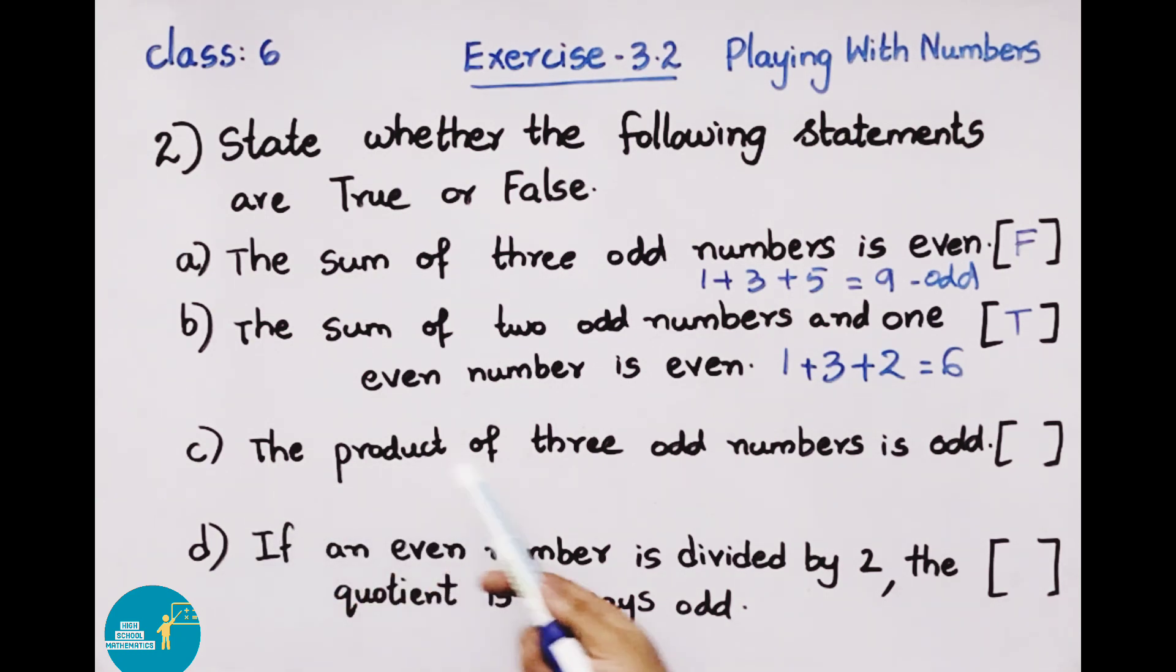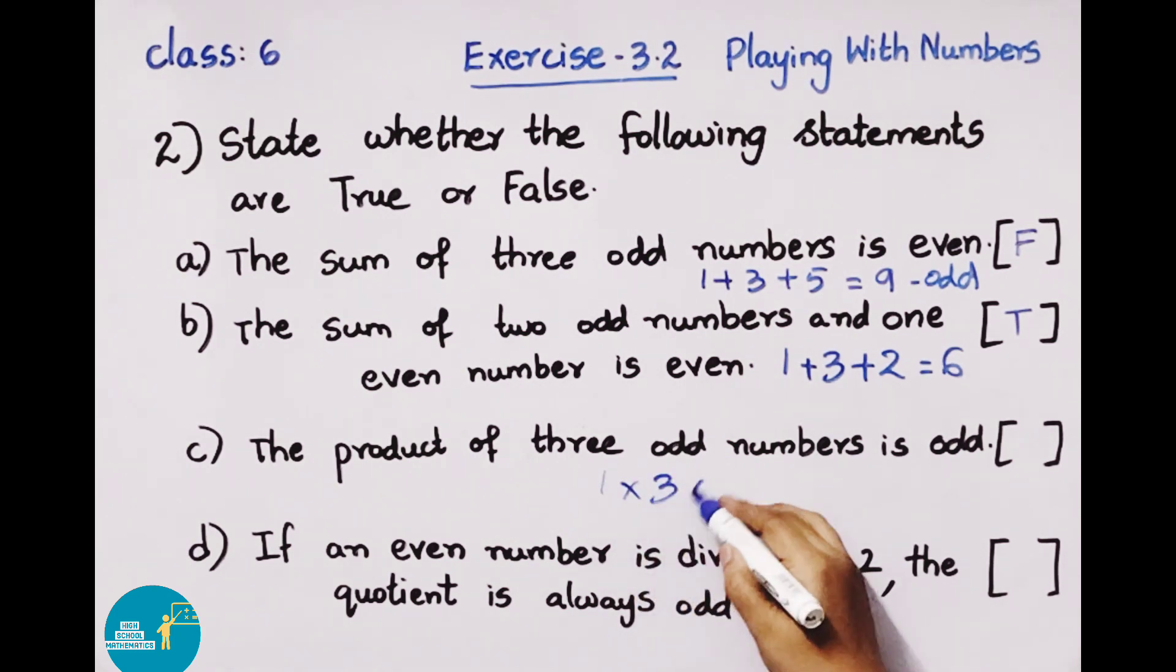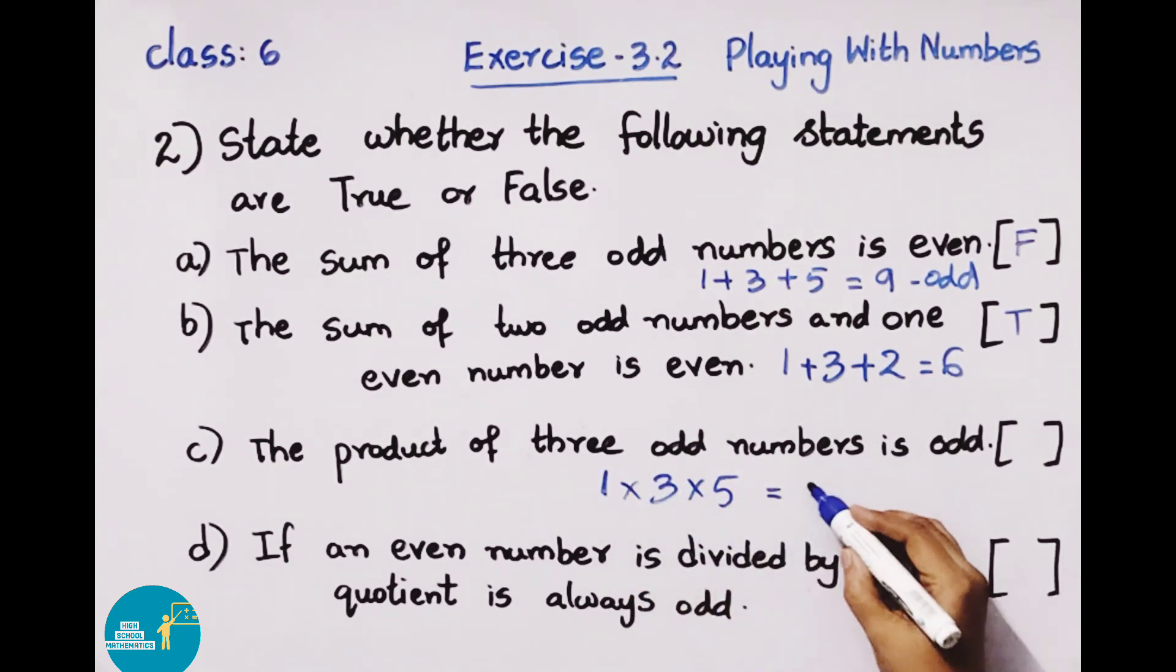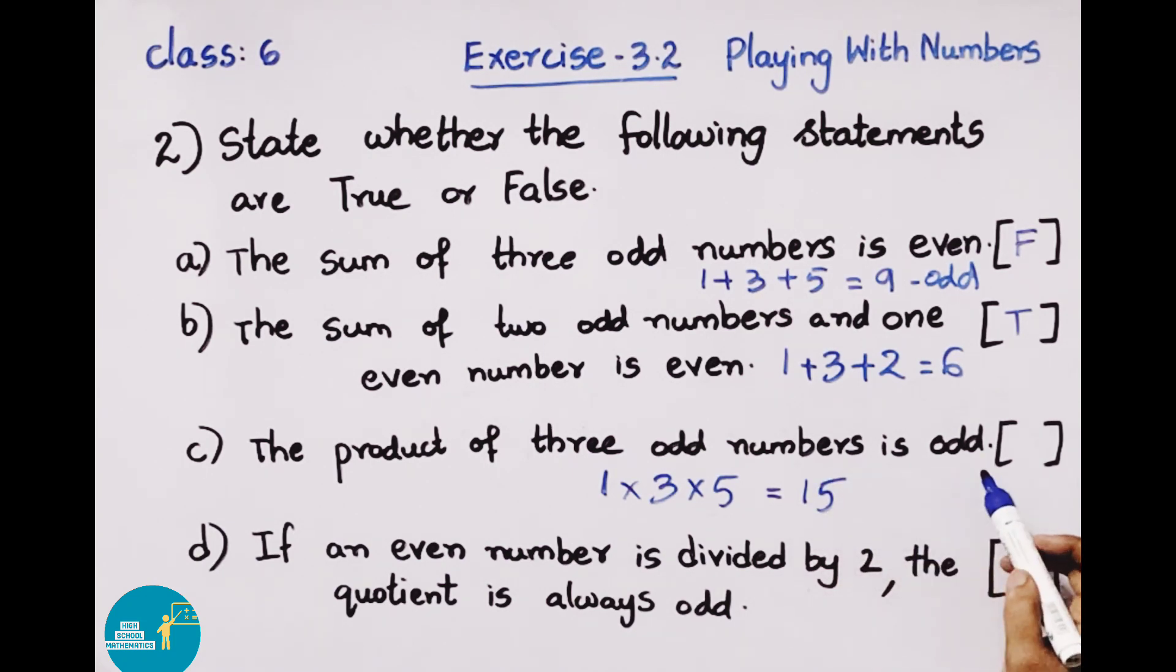Next, statement c: The product of three odd numbers is odd. Three odd numbers 1, 3, 5. When we multiply these three numbers: 1 times 3 is 3, 3 times 5 is 15. So 15 is an odd number, and the question says odd number. So this statement is true.